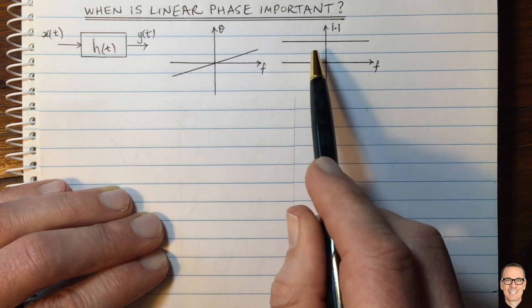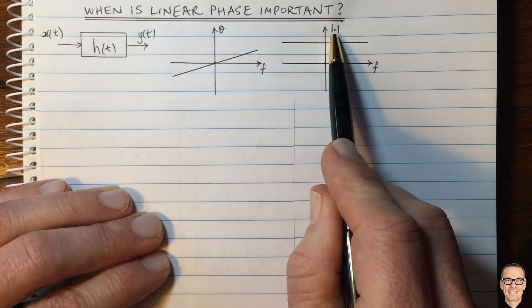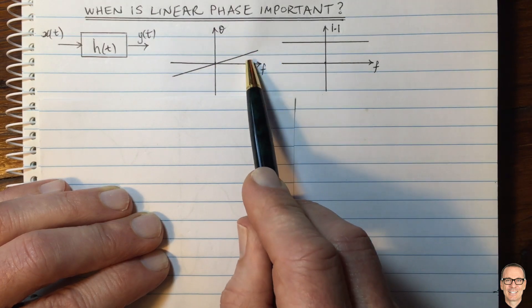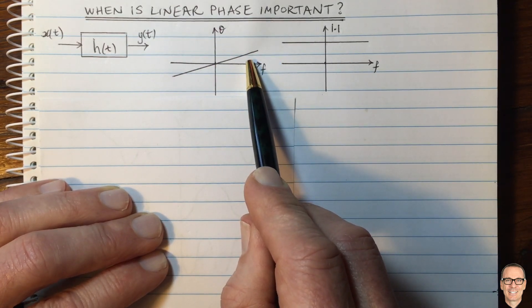We're going to consider a case where we have a constant magnitude. So the magnitude response is constant, but the phase is linear. And in this case, it corresponds to a constant delay.